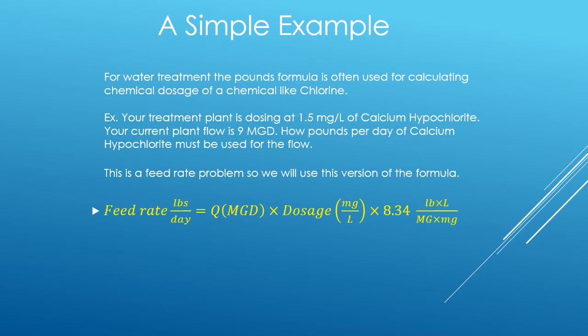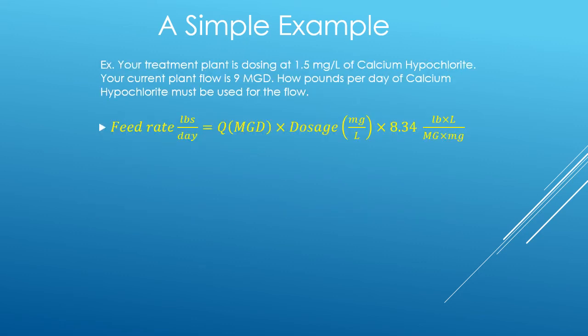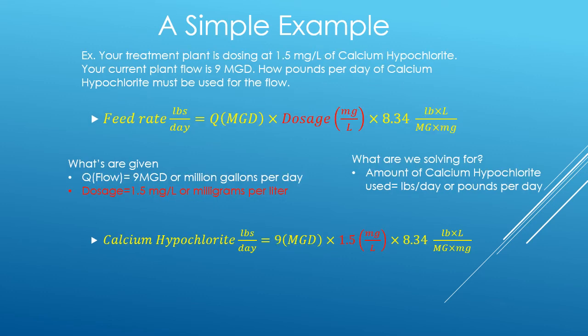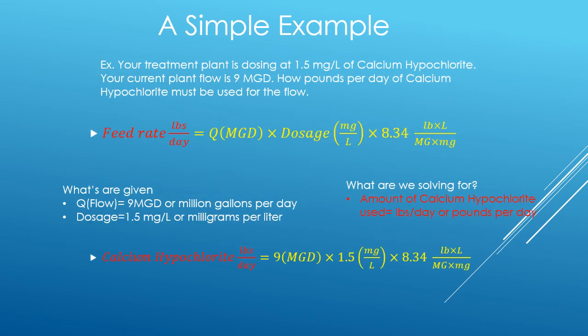After reading the problem, we know this is going to be a feed rate problem, so we select the feed rate equation. Let's see what we're given. First, we're given our flow, which is 9 MGD or 9 million gallons per day. We're given our dosage, which is 1.5 milligrams per liter. And we're trying to solve for our feed rate, which in this case is calcium hypochlorite in pounds per day.